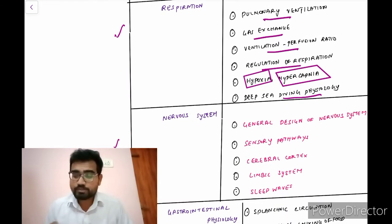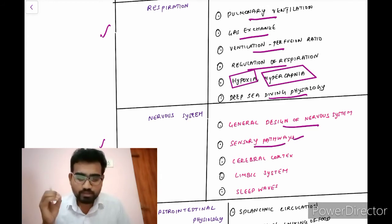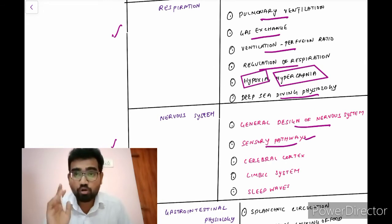So, coming to the nervous system, in the nervous system, you should know about the general design of a nervous system. And then the sensory pathways, the pathway of pain, touch, everything. You should know about all the pathways. And also the cerebral cortex, the limbic systems, and the sleep waves.